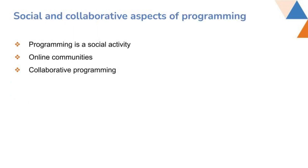The last aspect is the collaborative and social side of programming. We call programming a social activity because we do a lot of activities online — like taking help from open source and other resources. When you have something developed, you want to share it with the world, which is also a social activity. Online communities like Stack Overflow forums allow us to get help or help someone else.